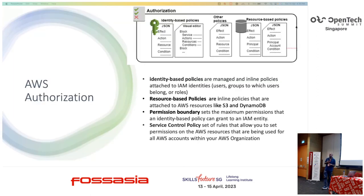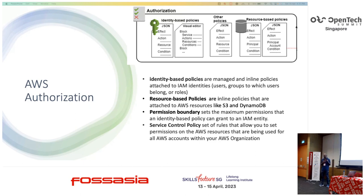When you are consuming those resources, you want to authorize — define what permissions that specific resource should have, what privileges you should give and utilize. That you do with the help of policies. When you define policies in AWS, there are multiple ways of defining policies, but we will be covering majorly four.